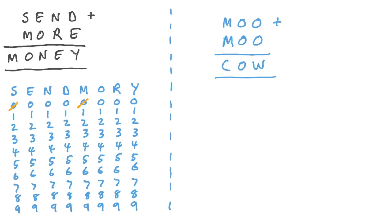Now, before we go back to send plus more equals money, let's do mu plus mu equals cow to pick up some more logic tips. We know we're not allowed leading 0, so m and c can't be 0.